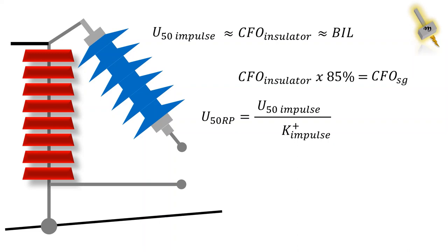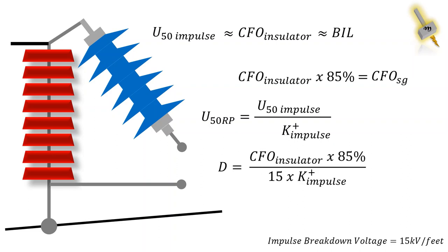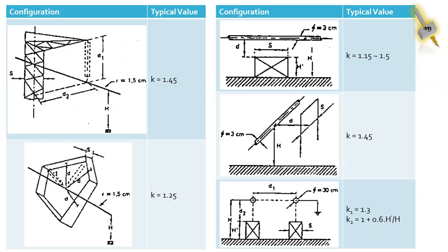Generally, it is accepted that impulse breakdown voltage of air is 15 kV per feet at standard temperature and pressure. Reconfiguring all the above formulas, the maximum spark gap is CFO insulator multiplied with 0.85 divided by gap factor and impulse breakdown voltage of air. These are some of the gap factor for converting rod plane electrode configuration to other electrode configuration.